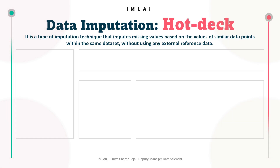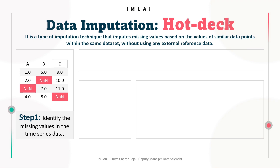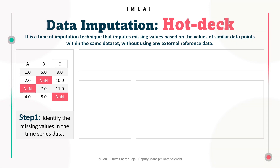Let's look into the hot deck imputation process step by step. First, as usual, let's identify the missing values in the time series data or any dataset. It could be a time series dataset or just a regular dataset — it doesn't need to be time series data, any dataset is fine.